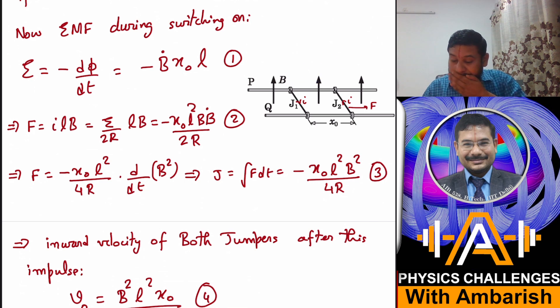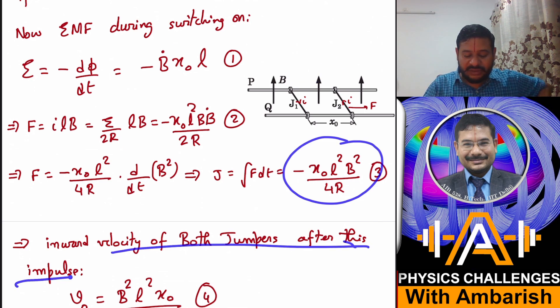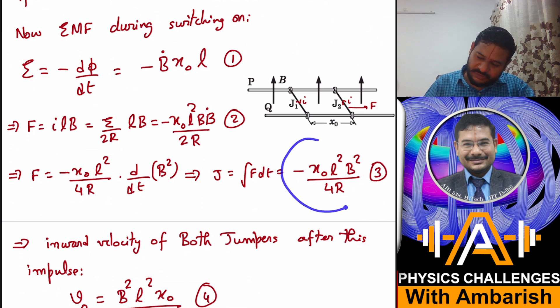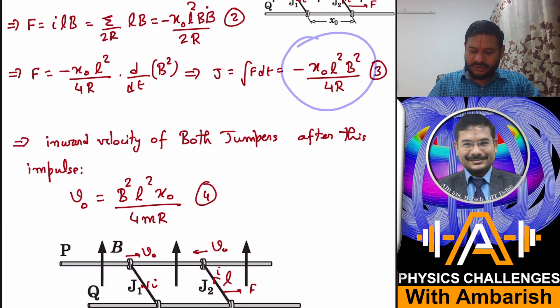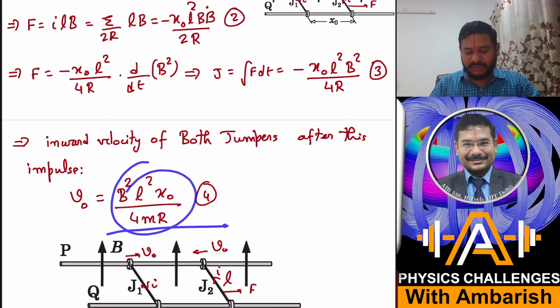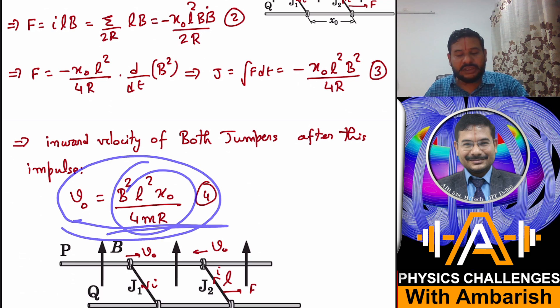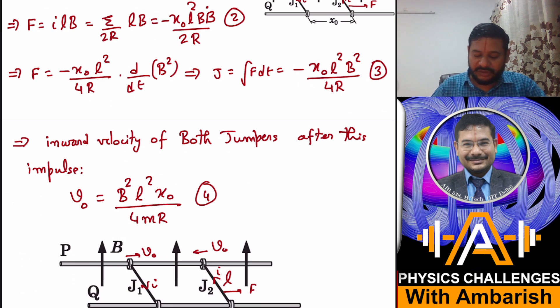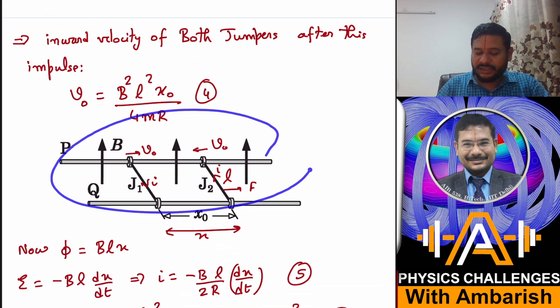So impulse comes out to be negative, that means the velocity of these rods will be inward. This is the impulse and inward velocity of both jumpers after this impulse will be what - you divide the impulse by mass, so you get B²·l²·x₀/(4mR). This is the velocity inwards immediately after switching the magnetic field.